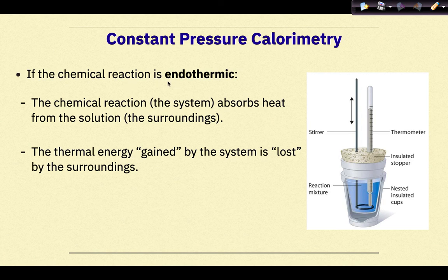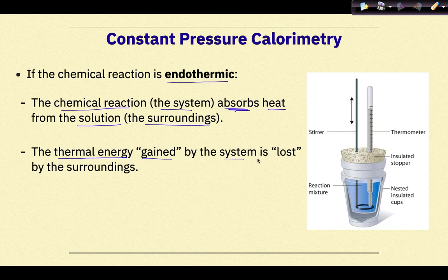If the chemical reaction is endothermic, the chemical reaction, the system, absorbs heat from the solution, the surroundings. The thermal energy gained by the system is lost by the surroundings. As the chemical reaction absorbs energy from the solution, we'd see a drop in the temperature. The solution will lose energy and we will see a decrease in the temperature.